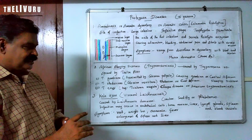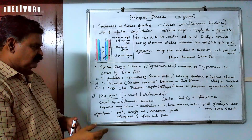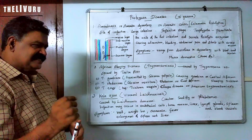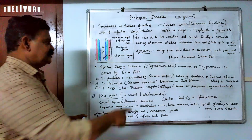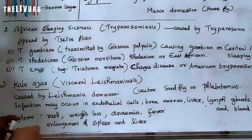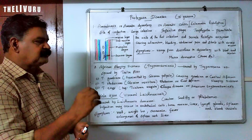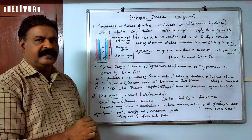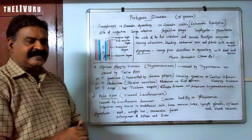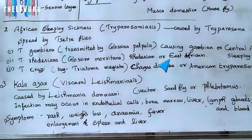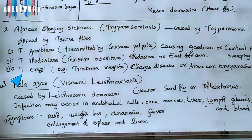This disease is transmitted by a tsetse fly, which is known as Glossina species. The tsetse fly transmits the Trypanosoma parasite. This is known as the East African sleeping sickness, caused by Trypanosoma rhodesiense transmitted by the Glossina tsetse fly.